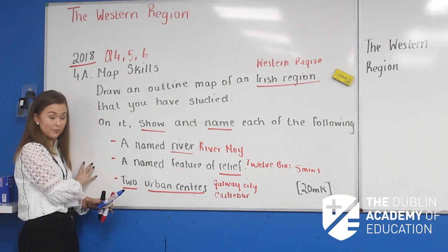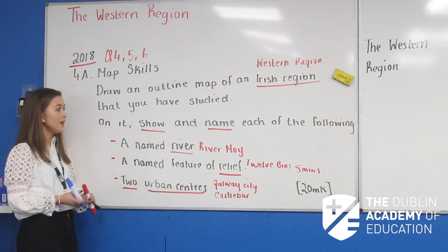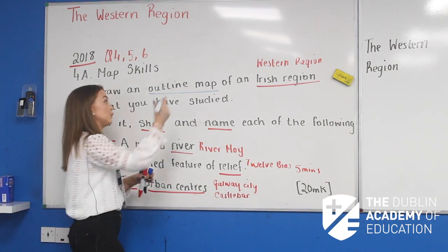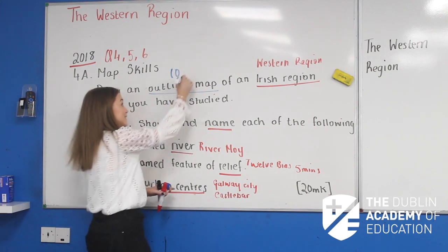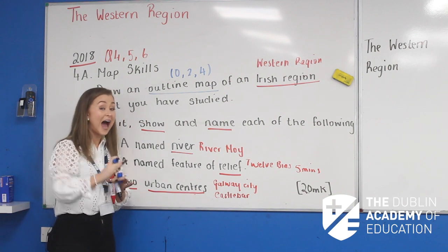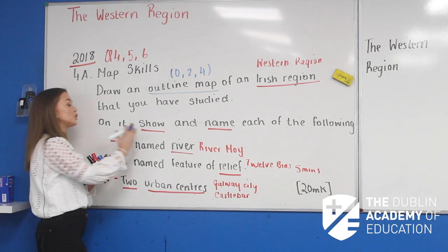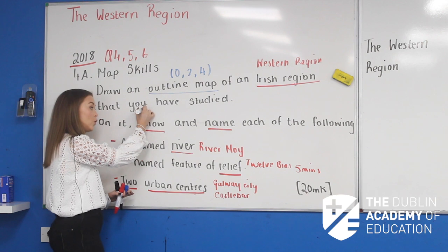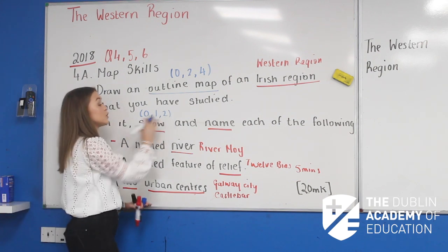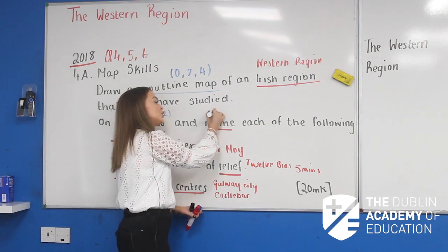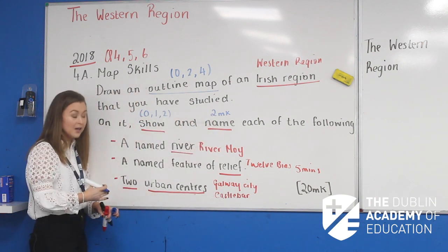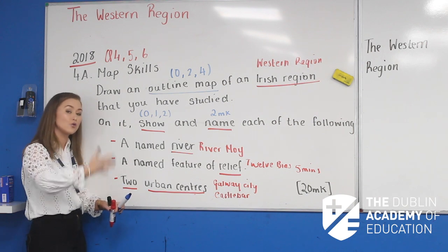Now here's how your examiner is going to mark this. The outline of the map is always marked as 0, 2, or 4 — so 0 if it's absolutely useless, 2 for middle, 4 if it's very good. When you're asked to show or locate — and there are always four items — the marking scheme is graded 0, 1, or 2: 0 marks if you're completely off, 1 mark if it's close, 2 if it's very well positioned. For naming, you get 2 marks every time — so for naming the River Moy you get 2 marks. Now we're going to pop over to the map and position each of these.